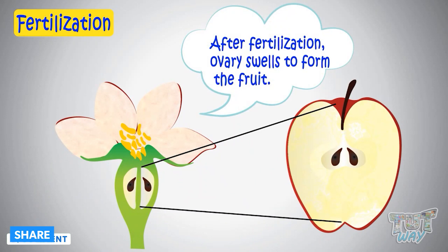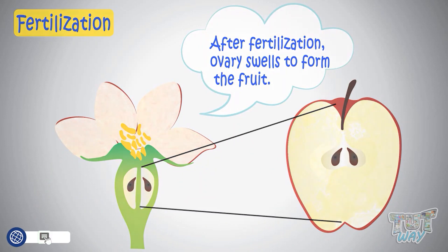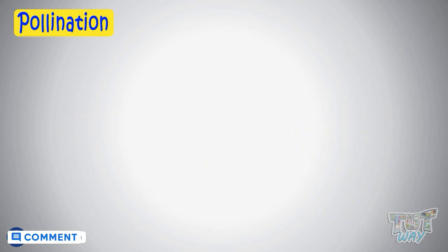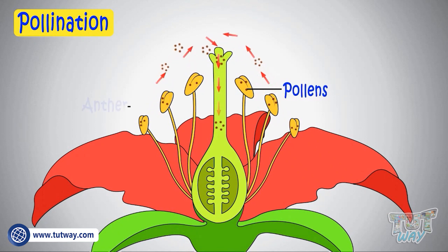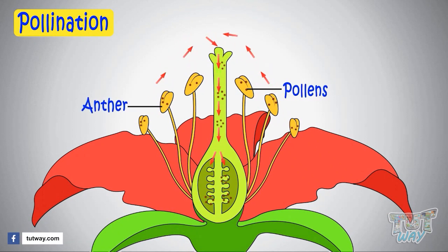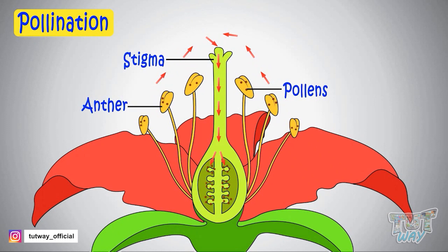Pollination is a process by which pollen is transferred from the anther — that is, the male part — to the stigma, which is the female part of the plant, thereby enabling fertilization and reproduction.